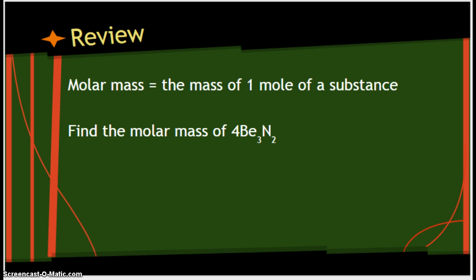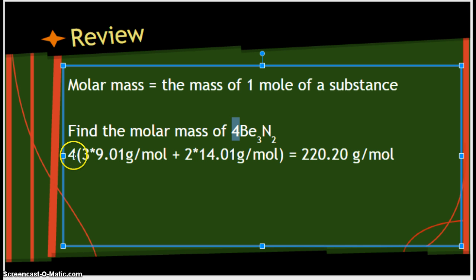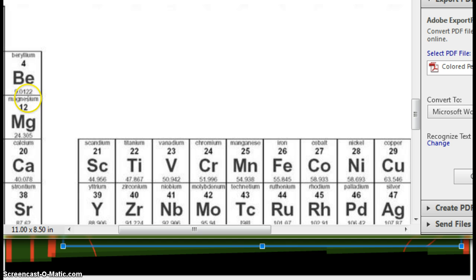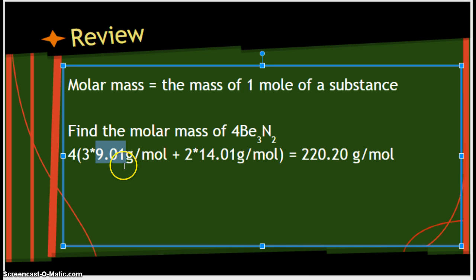Alright, so let's find the molar mass of four molecules of Be3N2. Hopefully you can hit the pause button and do this one. But if not, that's okay too. I'm going to explain it. So we knew that there was four copies, so we're going to multiply our whole answer by 4. Now Be, when we look at our periodic table, we have 9.0122. We want to round everything to hundredths, so 9.01.